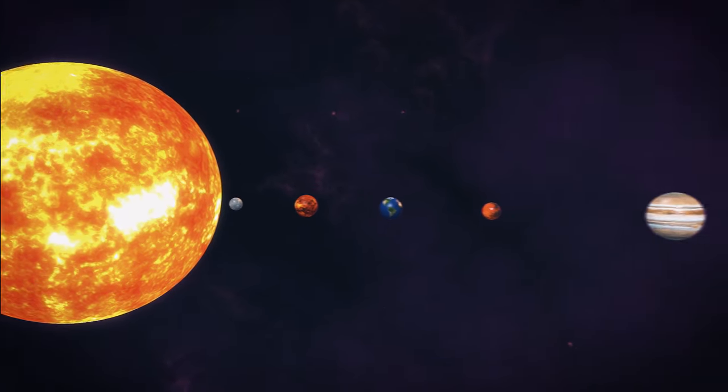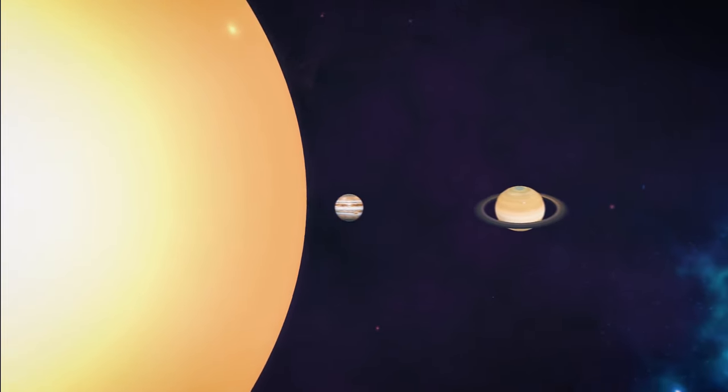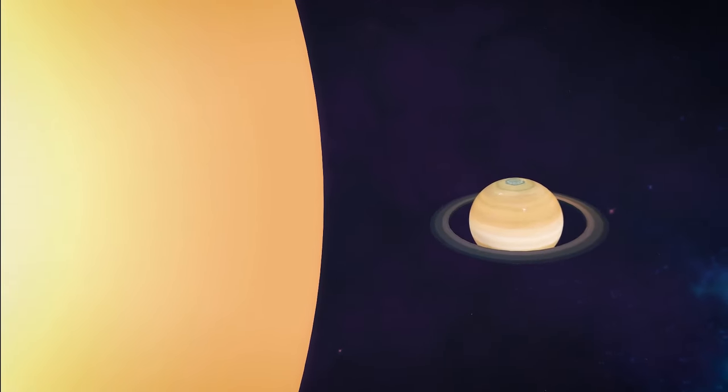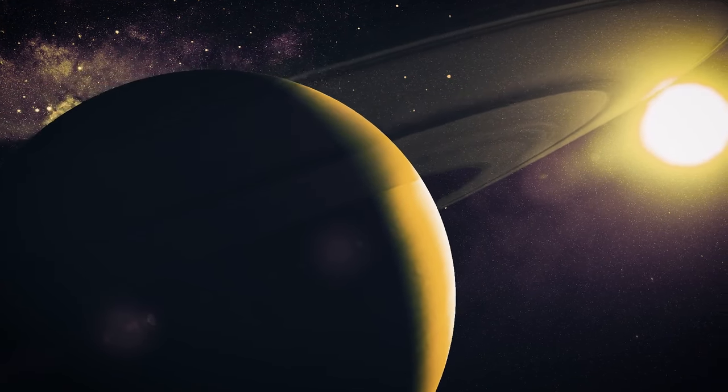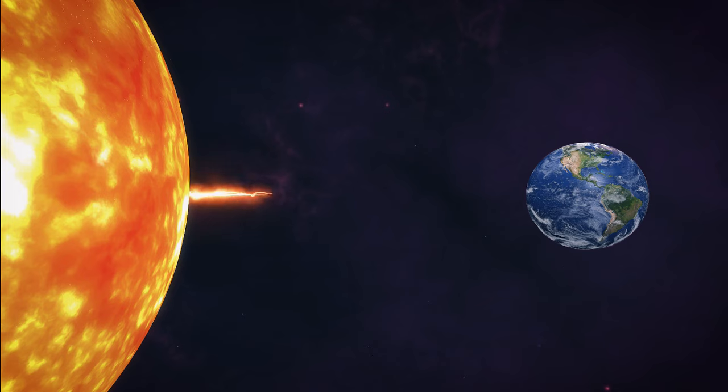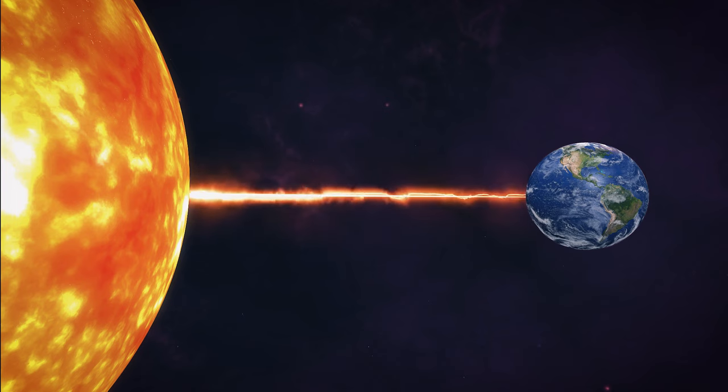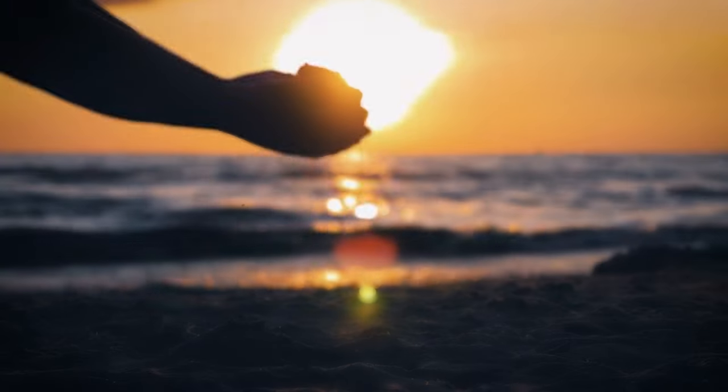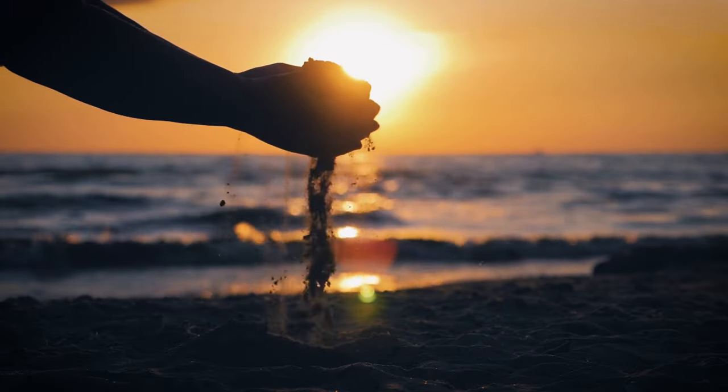If we placed My Cephei in the center of our solar system, it would bulge all the way out to Saturn's orbit. To remind you just how far away Saturn is, think of it this way. It takes the Sun's light eight minutes to reach Earth. To get to Saturn, it takes well over an hour. Compared to this massive star, the Sun is just a grain of sand.